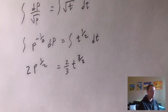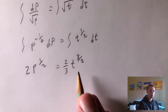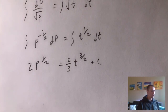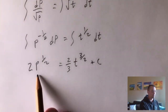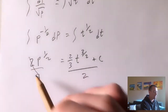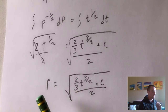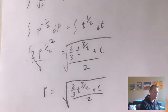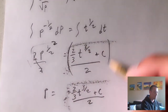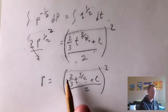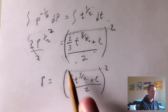We add the constant C on the variable side — since T is our variable, C goes on the T side. So we have 2P to the one-half equals two-thirds T to the three-halves plus C. Now we solve for P: divide both sides by two, then raise both sides to the second power to cancel the one-half power. This gives us P equals two-thirds T to the three-halves plus C, all over two, then all squared.